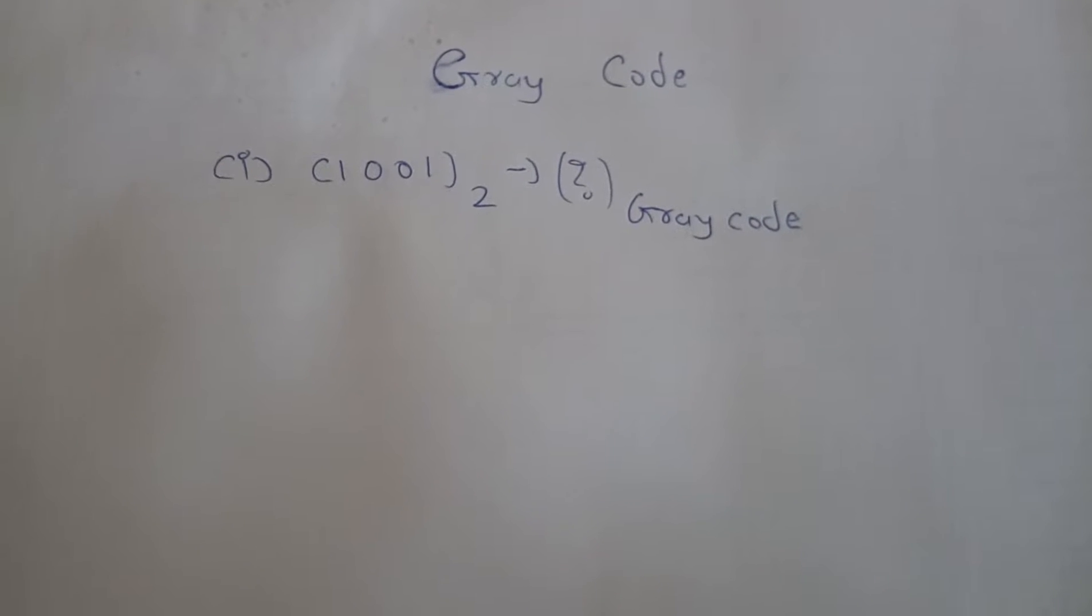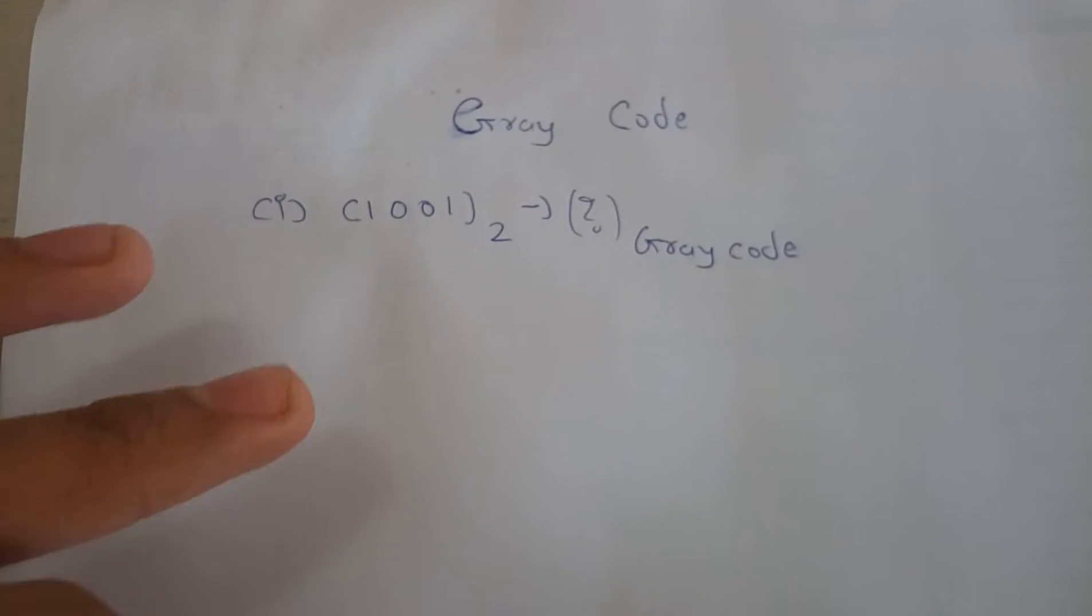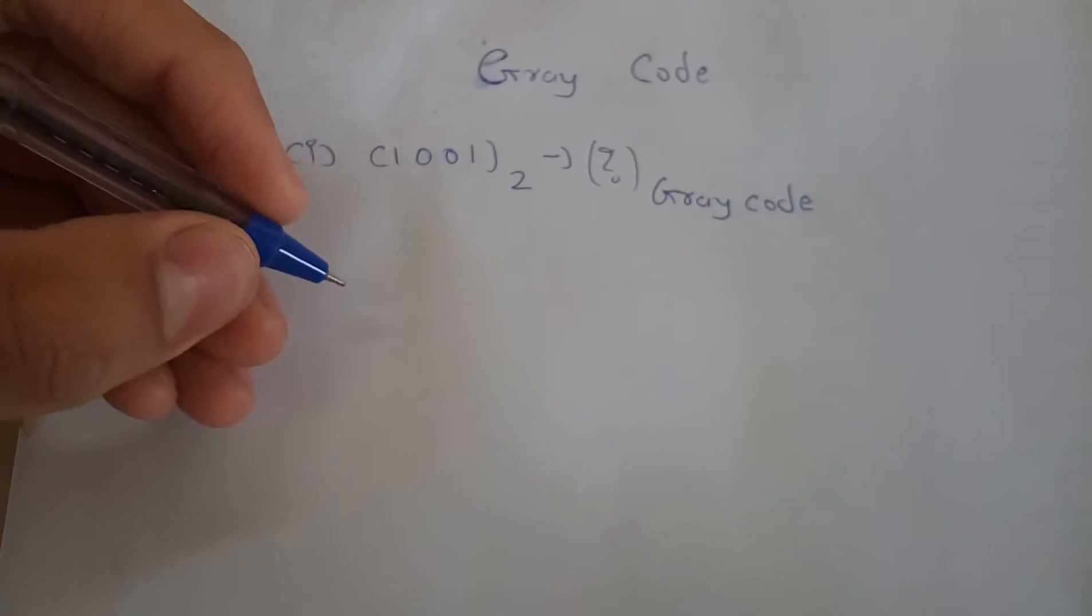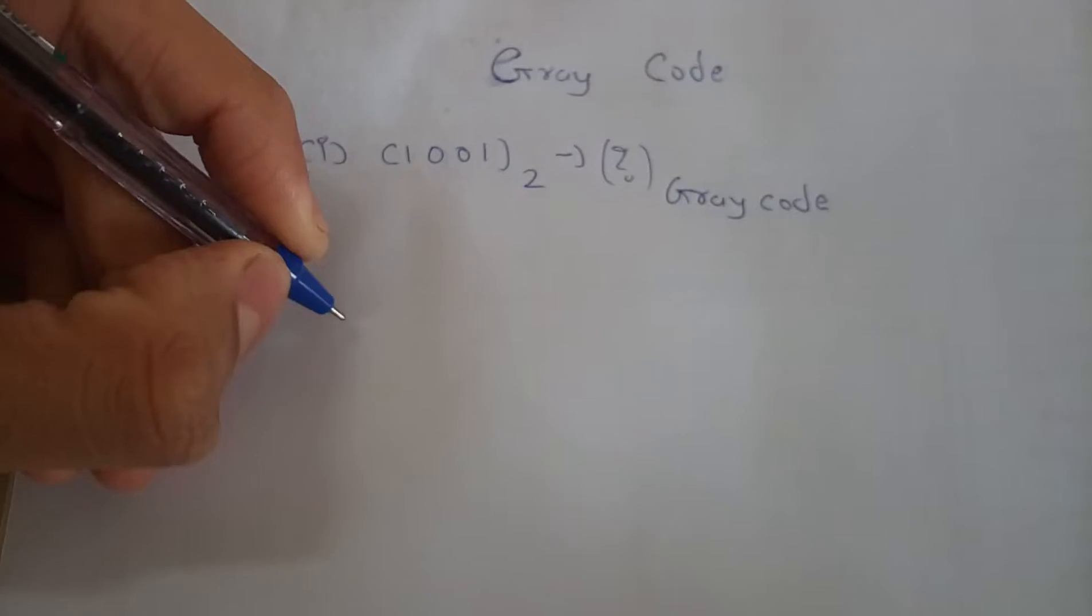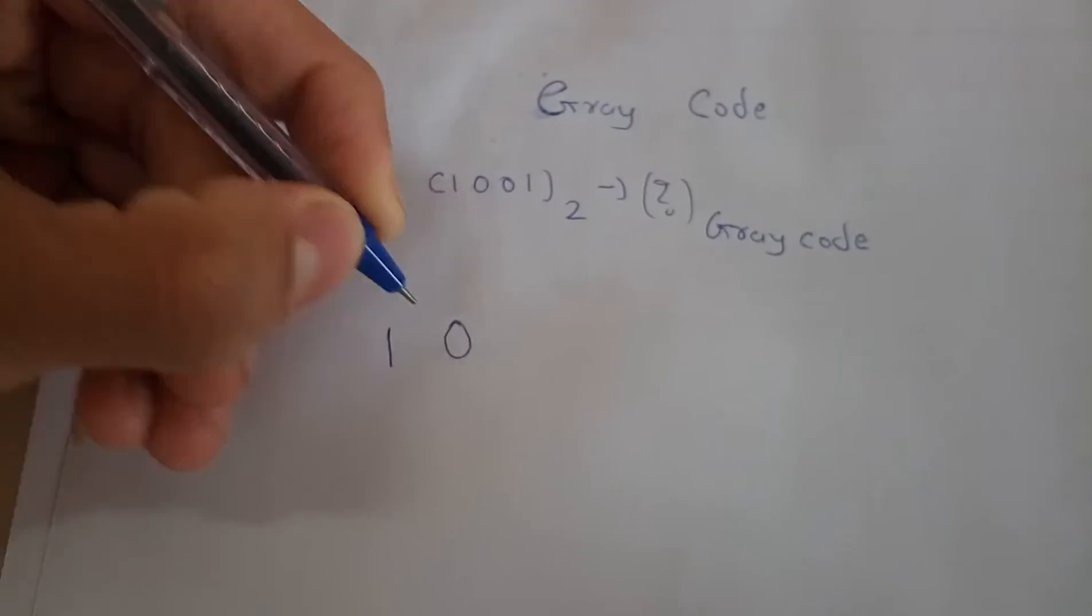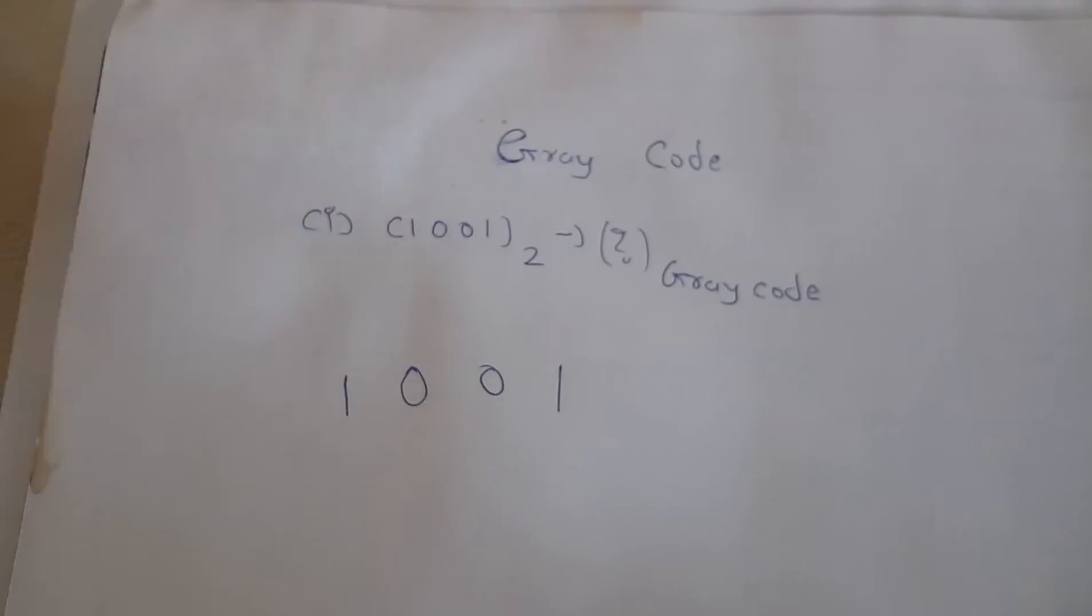Hey everyone, myself Faith, and today I'm going to show you how to convert Gray code from any 4-bit binary number. Let's check out this example: 1001. I'm writing this binary number in this form: 1001.